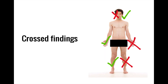The pattern that should immediately make you think it's in the brainstem is the presence of crossed findings, where deficits in the face are on the opposite side as deficits in the body. Crossed findings equals brainstem stroke.